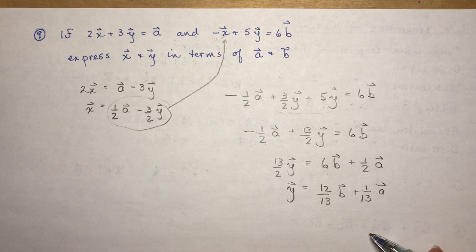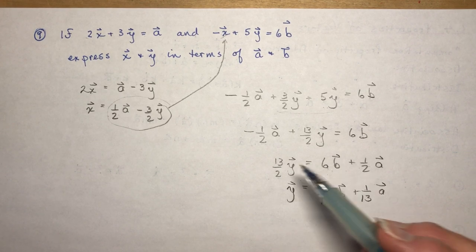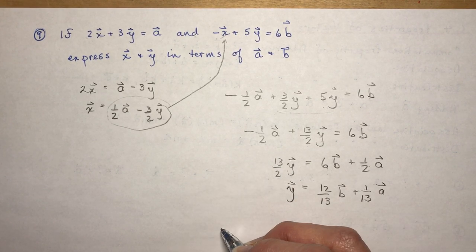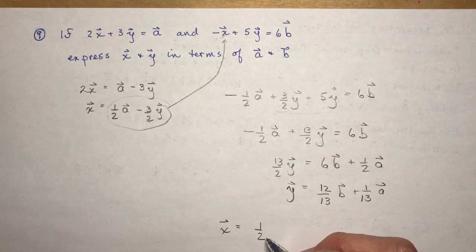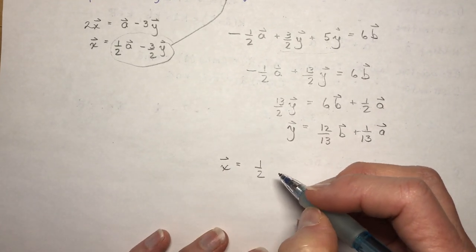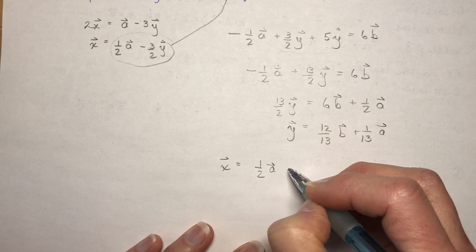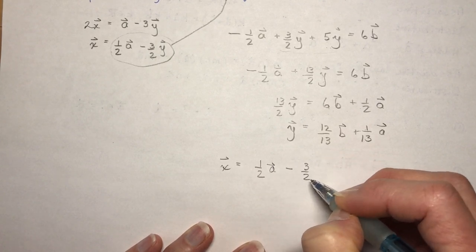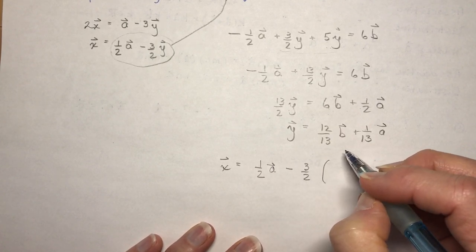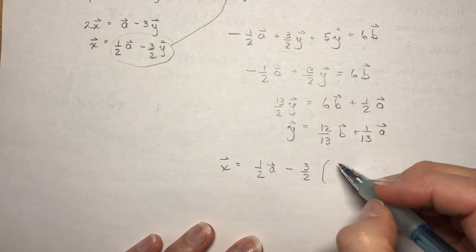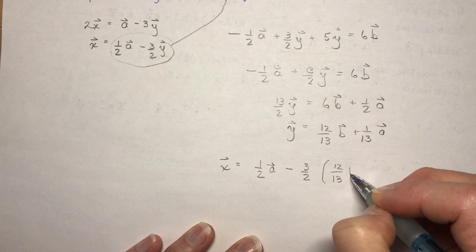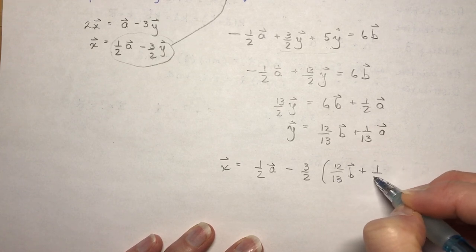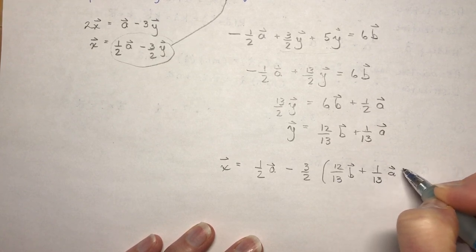That's okay. Now I'm going to plug that back in to find x. So vector x is going to be 1/2 vector a - 3/2 times my value for y, so 12/13 b + 1/13 vector a's.